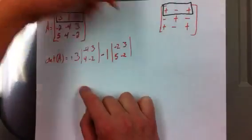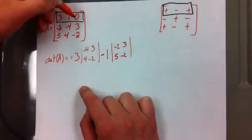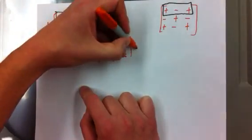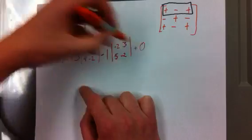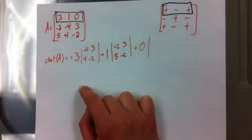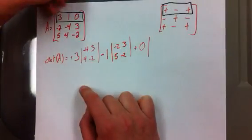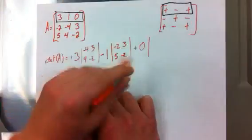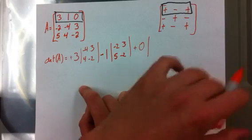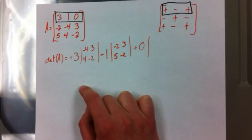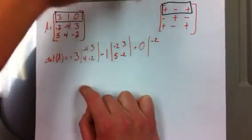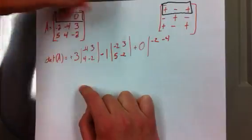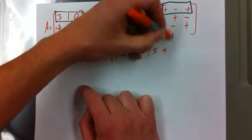Then we go to the next one — we have a plus zero. With cofactor expansion, zeros are nice because they make things very simple. Zero times anything is going to be zero, so we don't necessarily have to write it out, but I will just for example's sake. So we'll write a negative two, negative four, five, and four.